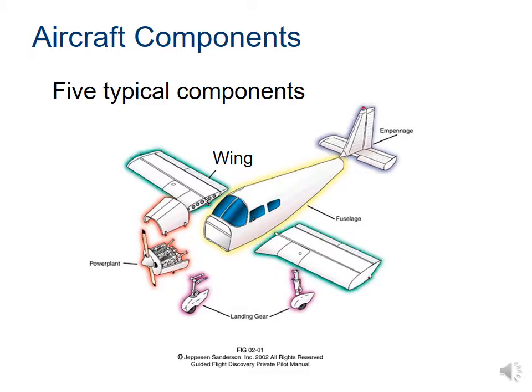The five typical components of a plane — we'll start with the wings. The wings' primary job is to provide lift, and we'll get lift when we have sufficient airflow over the wings. The wings can be attached at the top of the fuselage, the middle, or the lower portion, and that's going to be referred to as high wing, mid wing, or low wing.